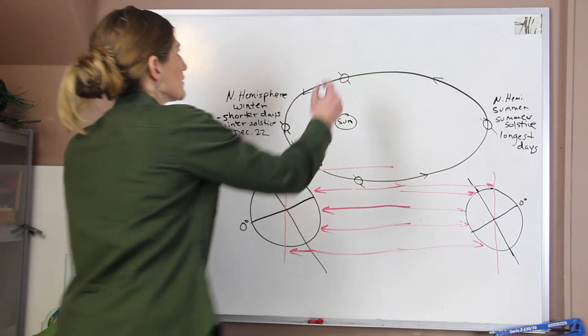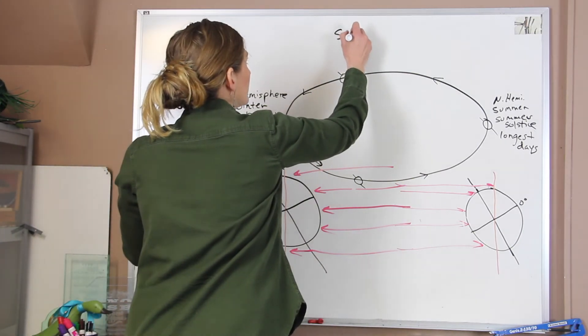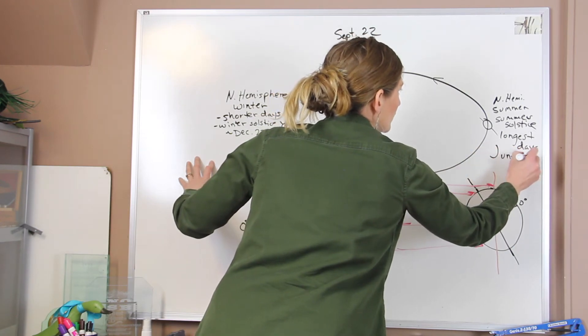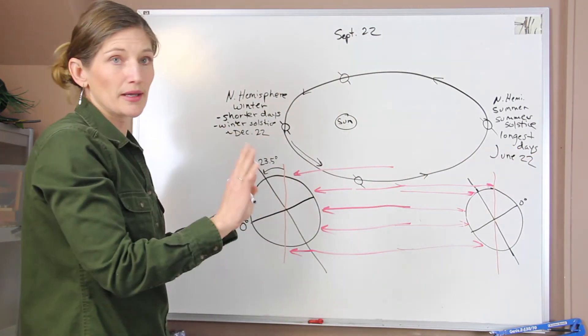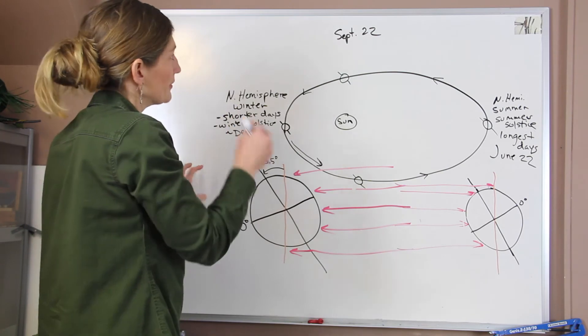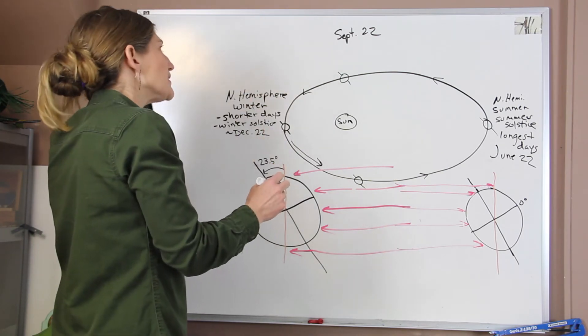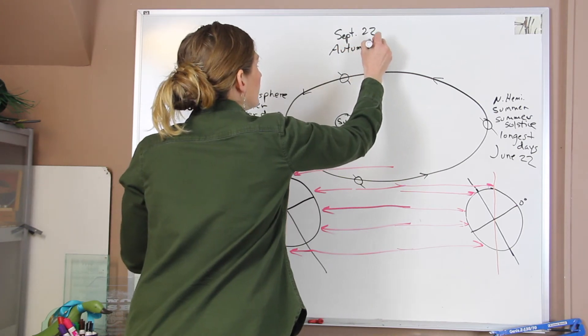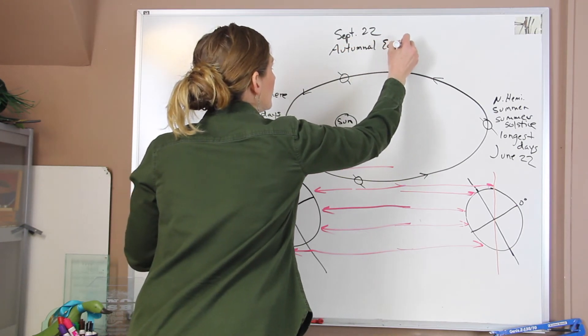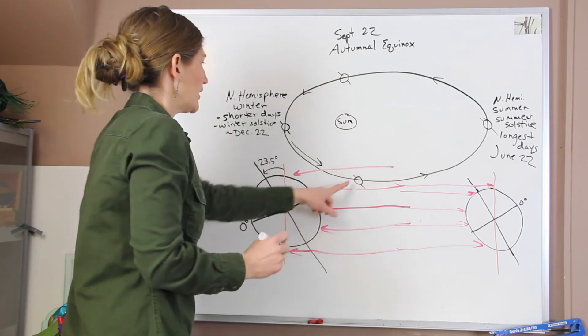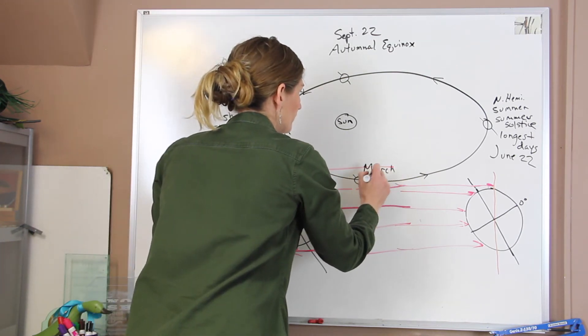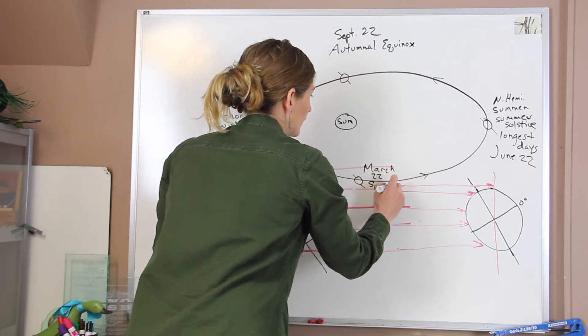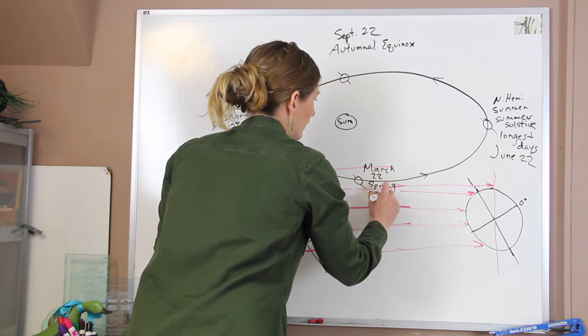Now when we get to our positions where we have our equinox. So this is in September, around September 22nd. Again, this is around June 22nd. It does fluctuate by a day or two in any given year. But around September 22nd, we have our autumnal equinox. Okay. And then here, around March 22nd, we have our spring equinox.